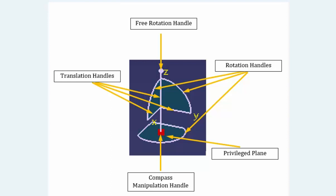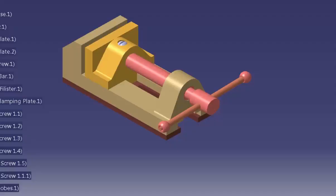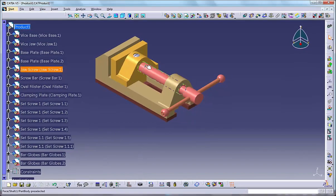In most cases in part design, all geometry is constrained or somehow related to the absolute origin. You cannot manipulate this geometry using the compass, but you can move isolated geometry or geometry imported from CATIA V4 with the compass. You can also move assembly components before you apply constraints to them.